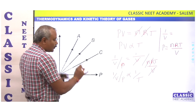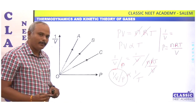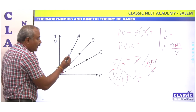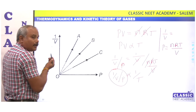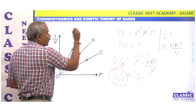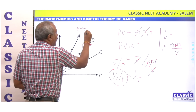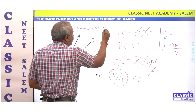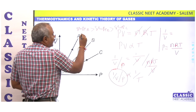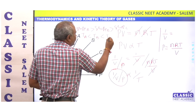So 1/V divided by P is the slope, and that slope is inversely proportional to temperature. Now, looking at the graph, slope A is greater than slope B is greater than slope C. Therefore, temperature A is less than temperature B is less than temperature C.